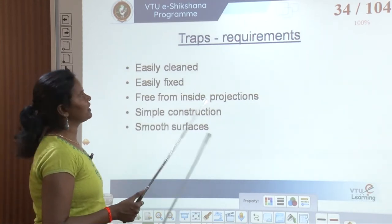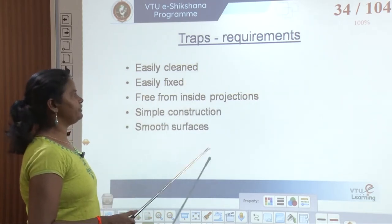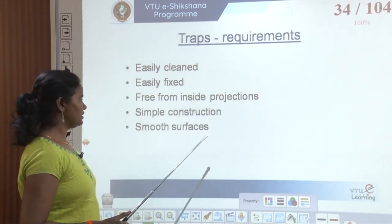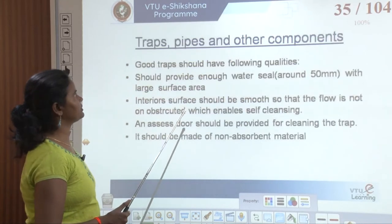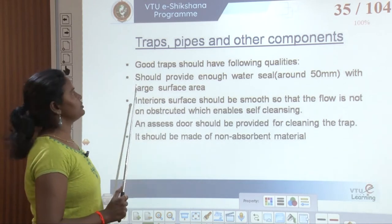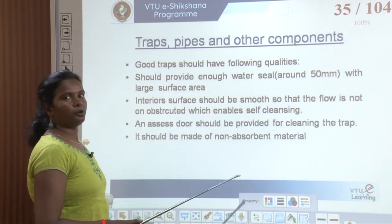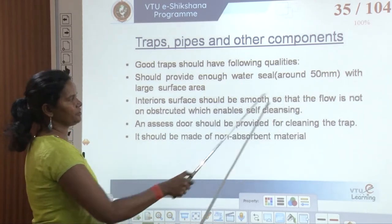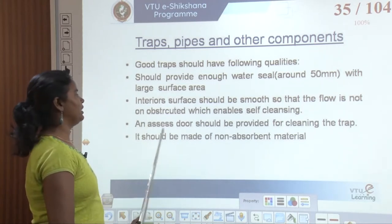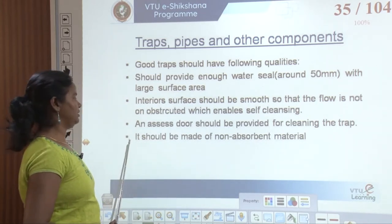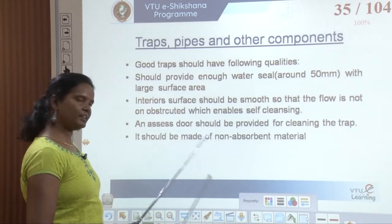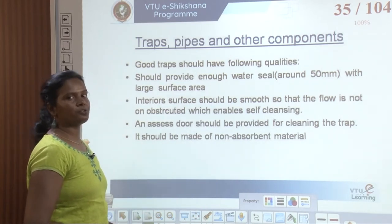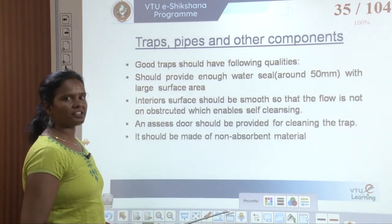Trap requirements: a trap should be easily cleanable, easily fixed, free from inside projections, simply constructed, and have a smooth surface. For good traps, it should provide enough water seal — minimum around 50 mm — with a larger surface area. The interior surface should be smooth and unobstructed, an access door should be there to clean the water seal, and it should be made of non-absorbent material. Clay pipes can absorb water, so the trap material must be non-absorbent.